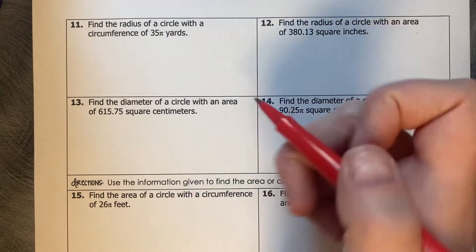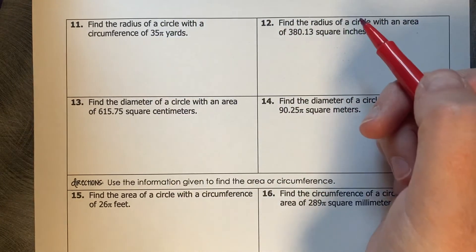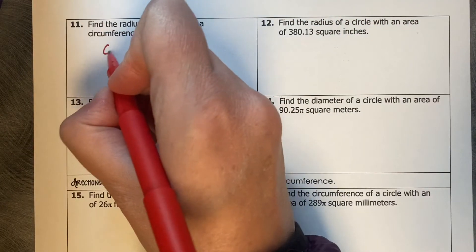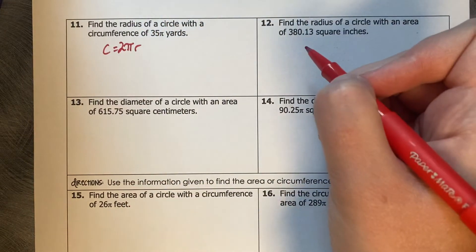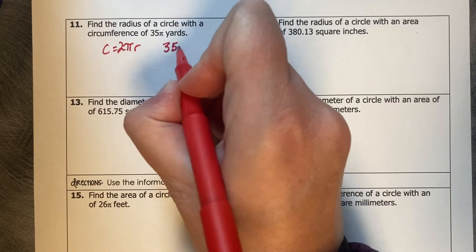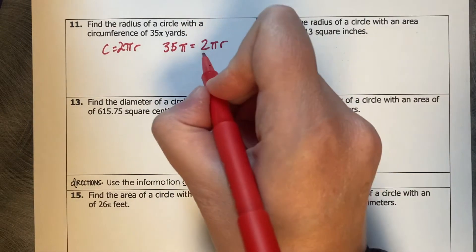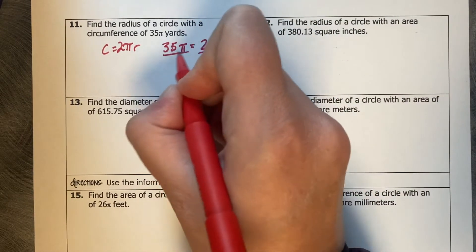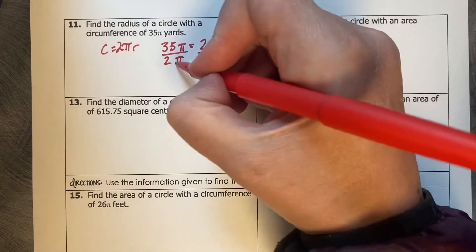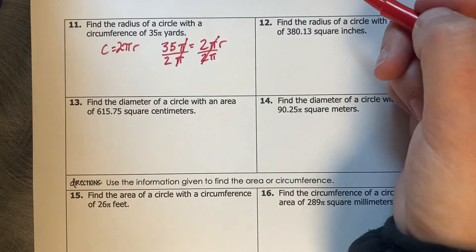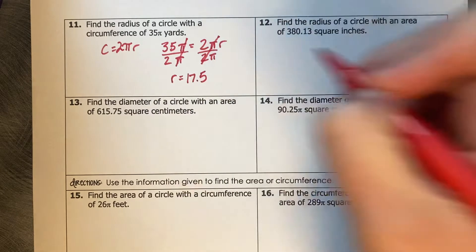Find the radius of a circle with a circumference of 35 pi yards. This is the first time it's had a pi on it. So circumference equals 2 pi r. So circumference is 35 pi equals 2 pi r. Divide by 2 pi. And then this time the 2 pi's cancel, the pi's cancel, and you just do the 35 divided by 2. And the 35 divided by 2 is 17.5.